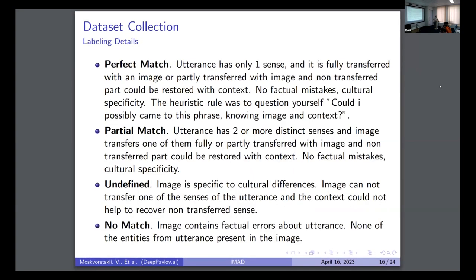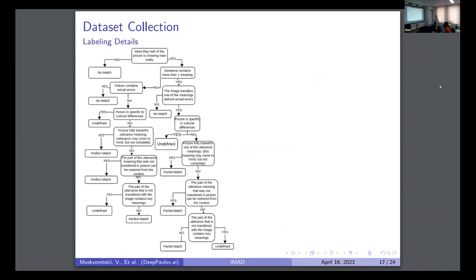Then I'll talk a little about how the labels were defined. We have perfect match. Perfect match is that the utterance has only one sense, and it is fully transferred with an image. It was crucial for us to have no factual mistakes, no cultural specificity. There was a heuristic rule: could I possibly come to this phrase knowing the context and seeing an image? There was partial match when the utterance has two or more senses, and one of them is a perfect match. There was undefined when an image has some cultural specificity or when the utterance sense could not be properly restored with the context. And no match when there are factual errors or even no entities were presented in an image.